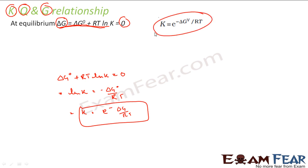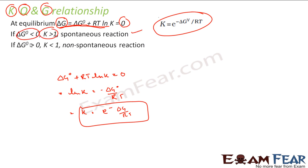Also, as we have told, if delta G is less than zero and K is greater than one, the reaction is spontaneous. If delta G is greater than zero and K is less than one, it is non-spontaneous. So this is the relationship between K and G. Just remember this relationship to solve numericals.